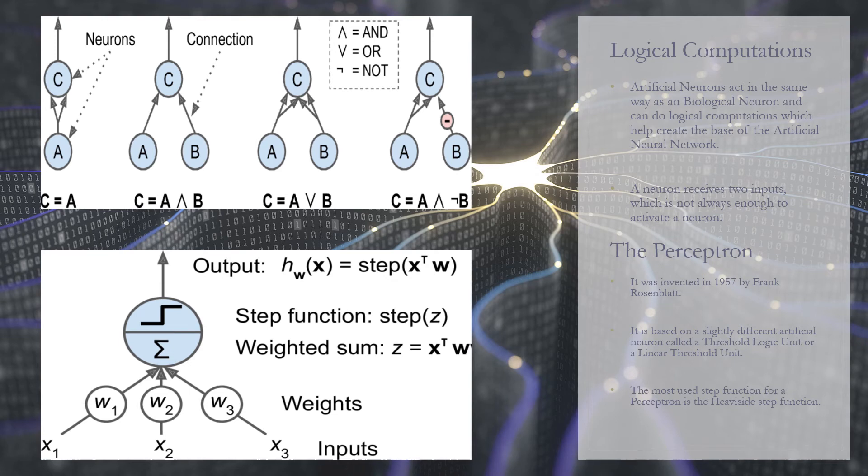Finally, if we suppose that an input connection can inhibit the neuron's activity, which is the case with biological neurons, then the fourth network computes a slightly more complex logical proposition. Neuron C is activated only if neuron A is active and neuron B is off. If neuron A is active all the time, then you get a logical NOT: neuron C is active when neuron B is off and vice versa.